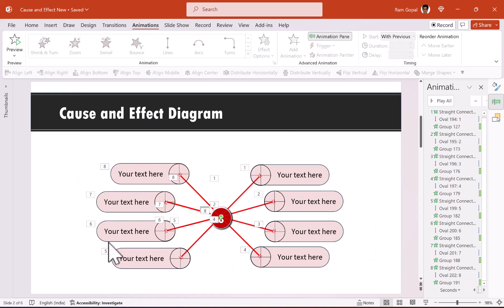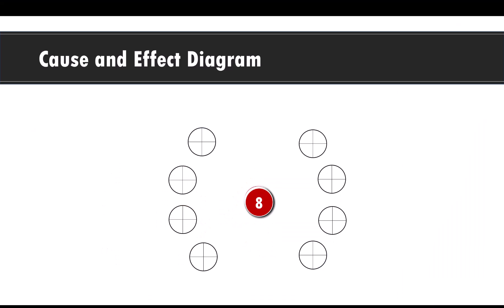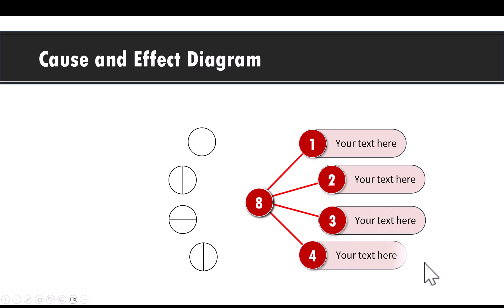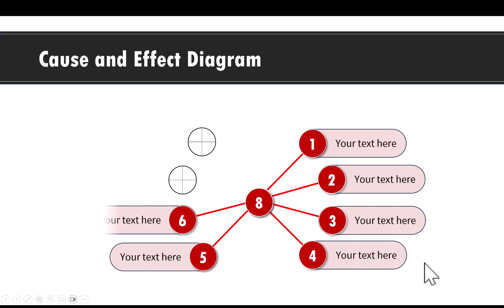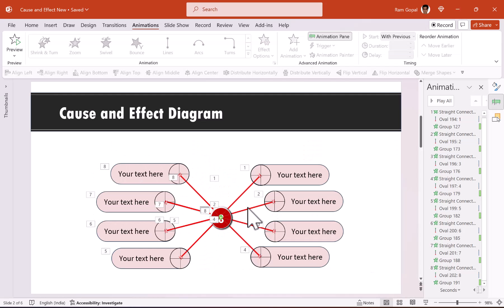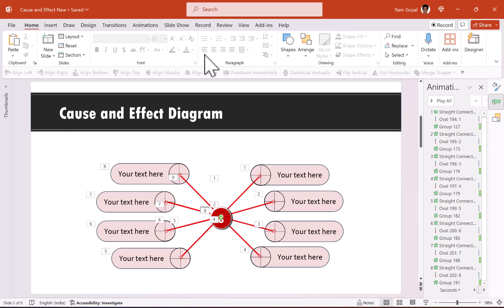We have completed the routine for all eight circles. Going to Slide Show, all numbers start in the center. On each click, number one and number two appear, then number three, four, five, and so on for all eight effects.